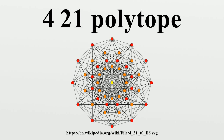The 421 polytope is composed of 17,280 simplex and 2,160 orthoplex facets. Its vertex figure is the 321 polytope. For visualization, this 8-dimensional polytope is often displayed in a special skewed orthographic projection direction that fits its 240 vertices.